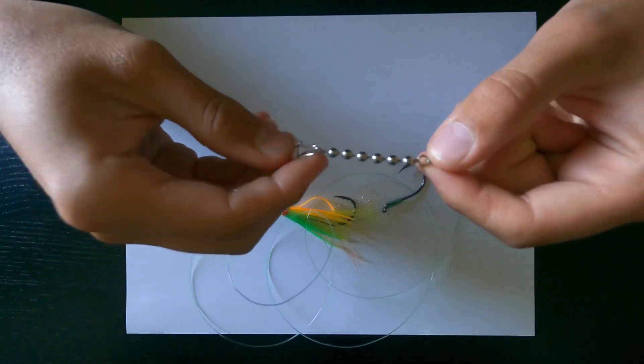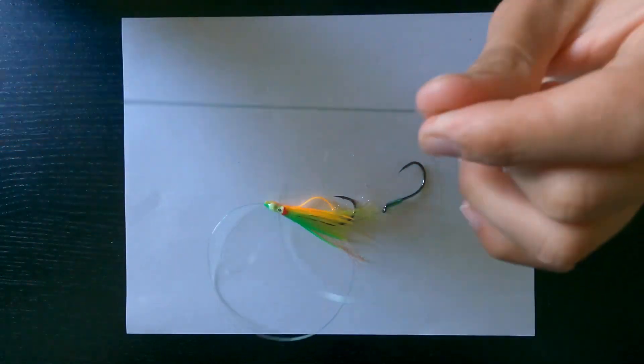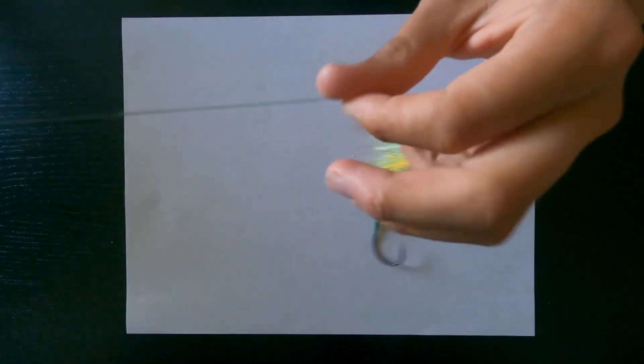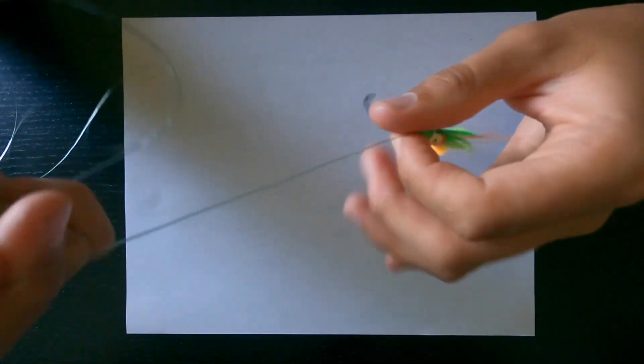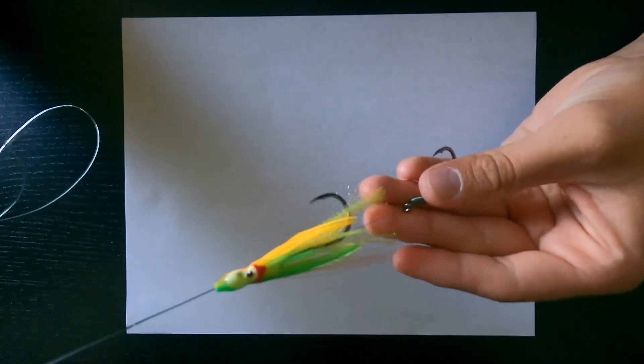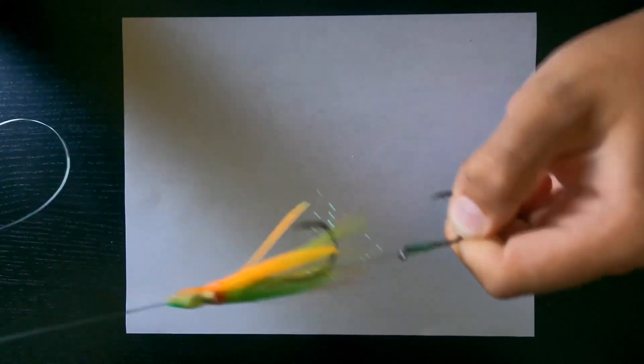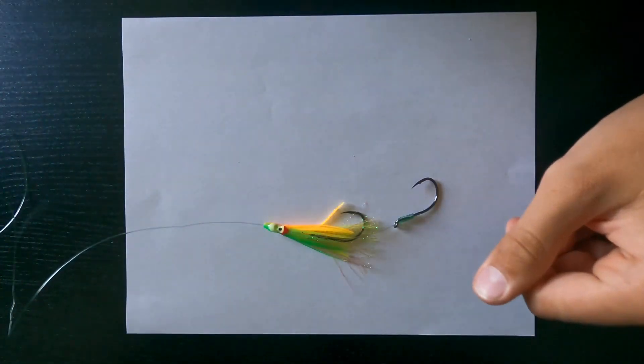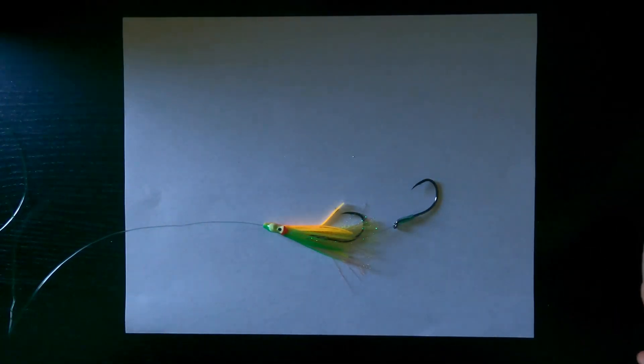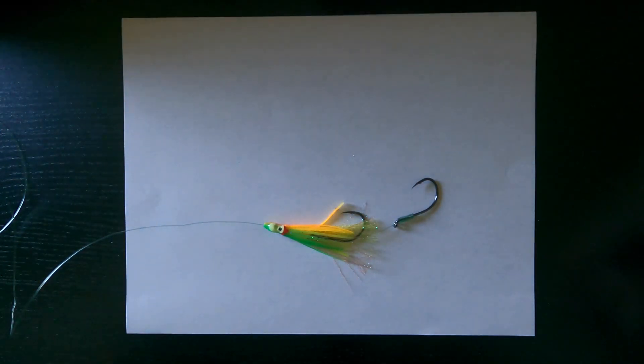And that's pretty much it. You got your swivel to your main line, 40 pound mono all the way down to your hoochie, to your tinsel skirt, to your two hooks that are fixed, they're not sliding. And that is a very easy simple way to catch fall chinook and coho out in the ocean.